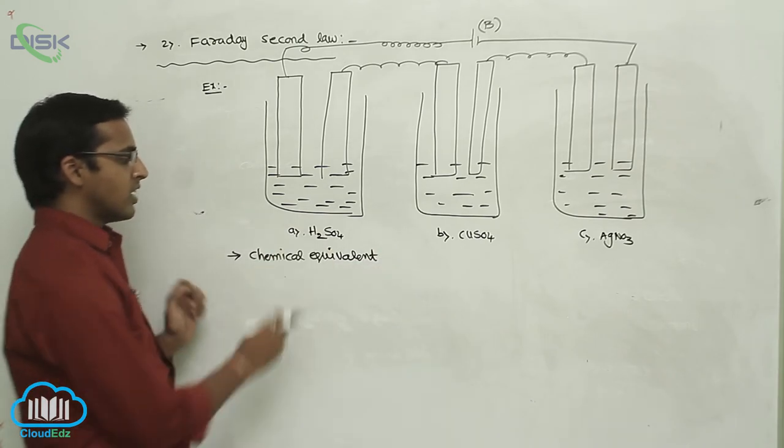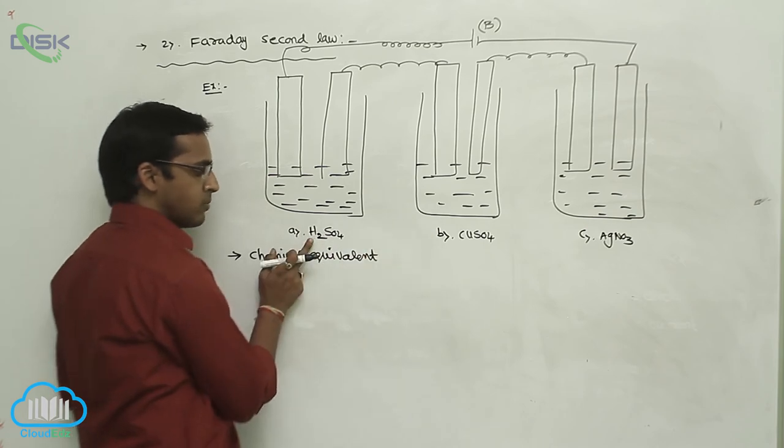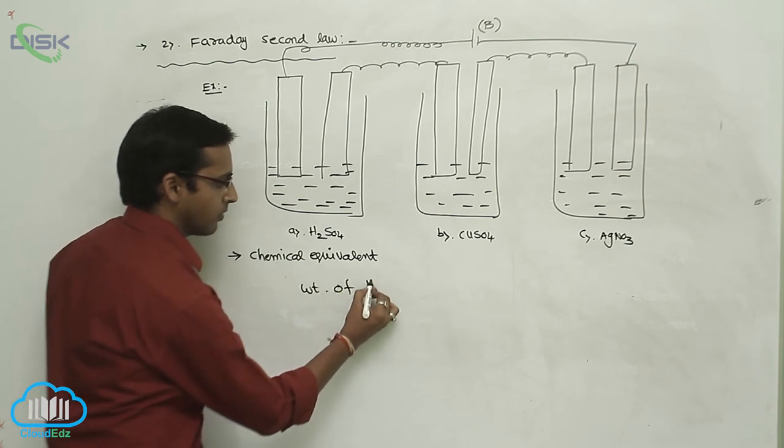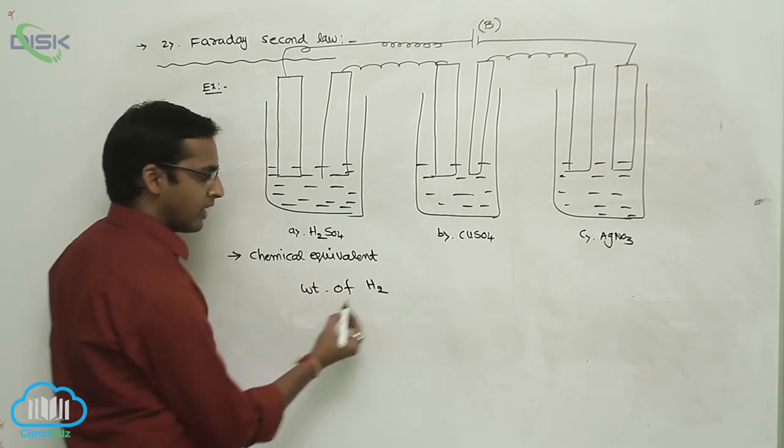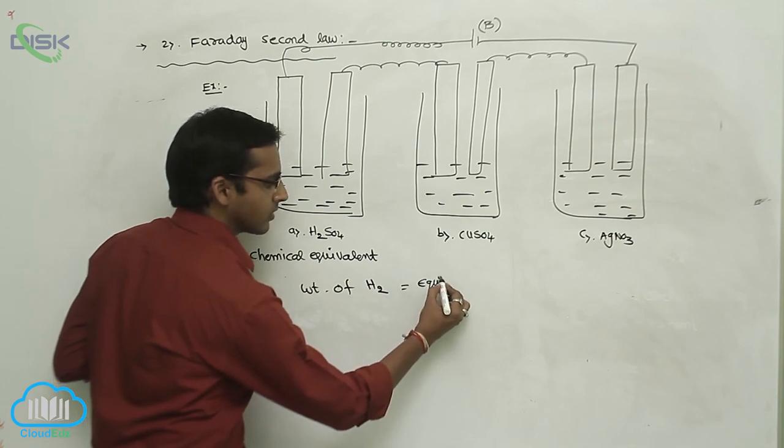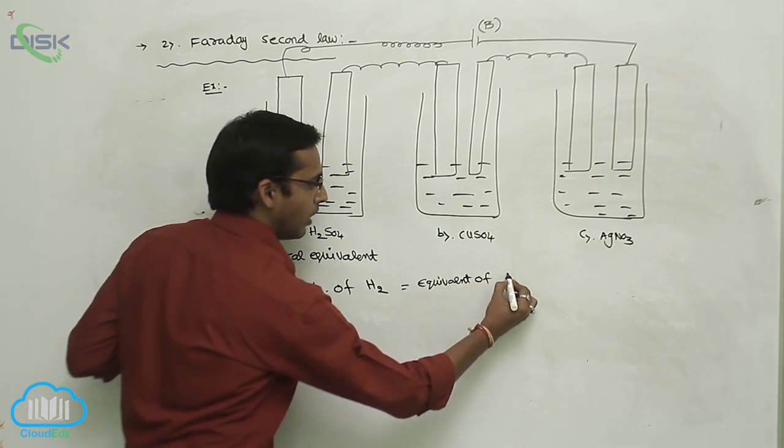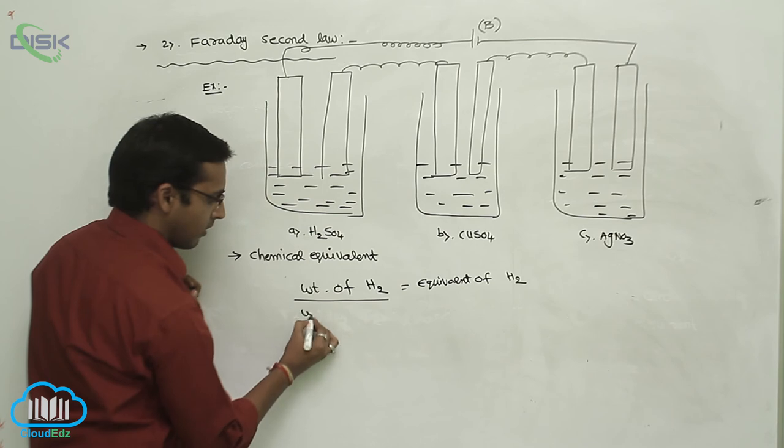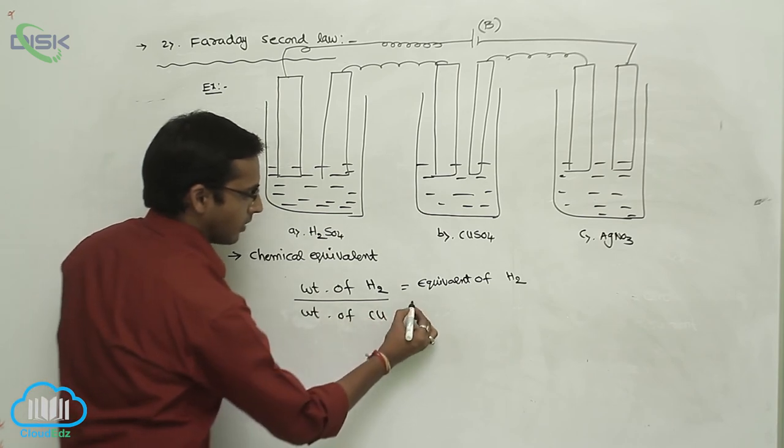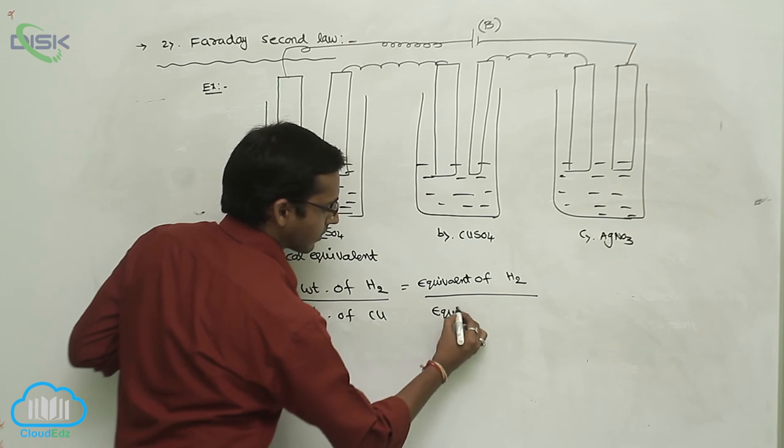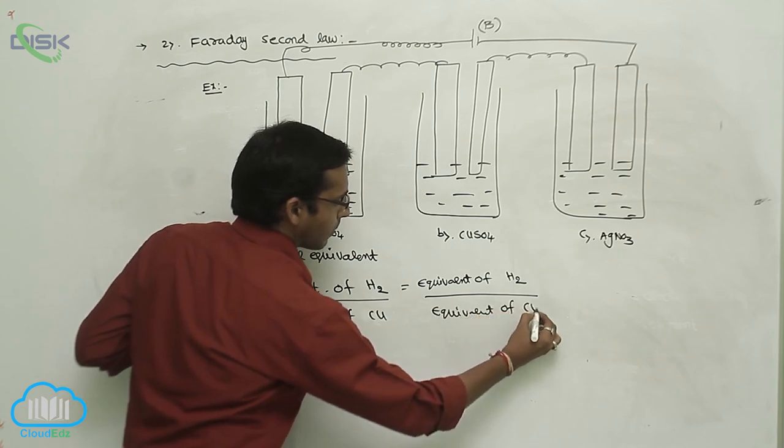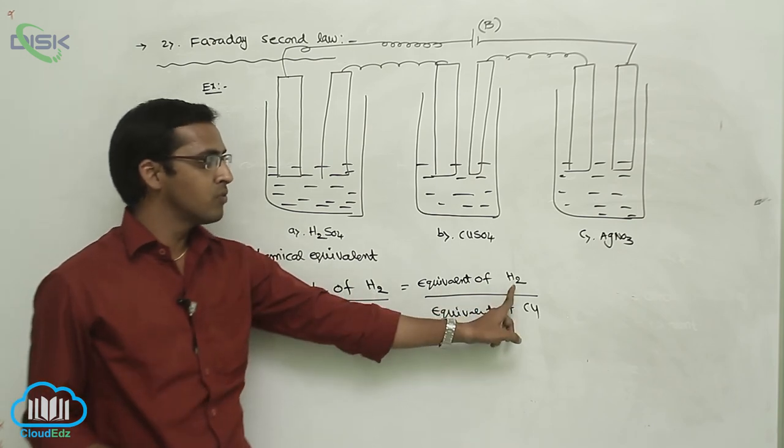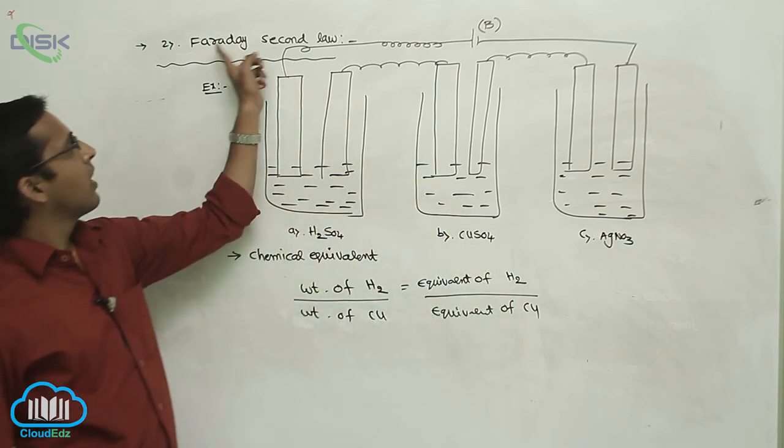For example, if you consider the first two beakers - first beaker is sulphuric acid, second beaker is copper sulphate. The weight of hydrogen divided by the weight of copper equals the equivalent of hydrogen divided by the equivalent of copper. This means the weight of substance is directly proportional to the equivalent of that substance, which is called Faraday's second law.